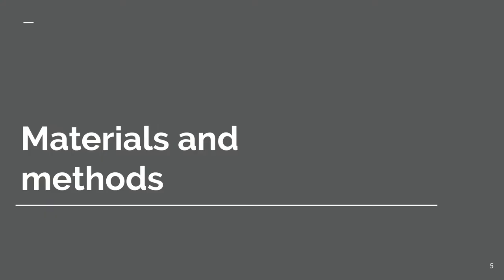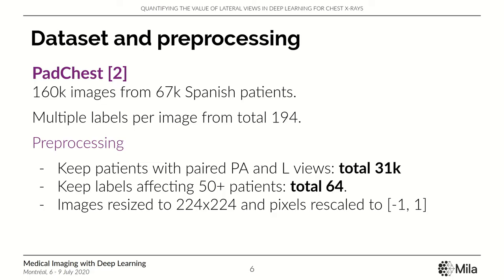For our dataset, we use the PadChest dataset, which has images from around 67,000 Spanish patients. An image can have any number of labels from a total of 194. For our analysis, we use a subset of the patients and labels that meet our criteria, and we pre-process the images in the standard way.